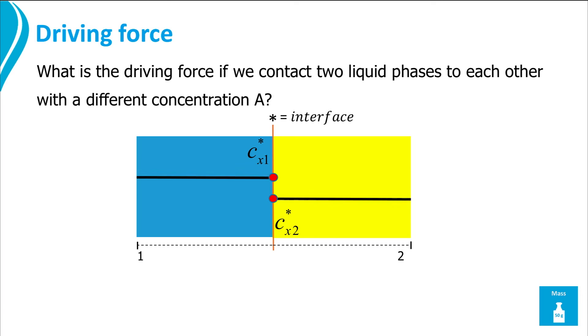This means the thermodynamic potential mu in both phases is equal, and the concentration of x in both phases is distributed according to the value of the partition coefficient m.